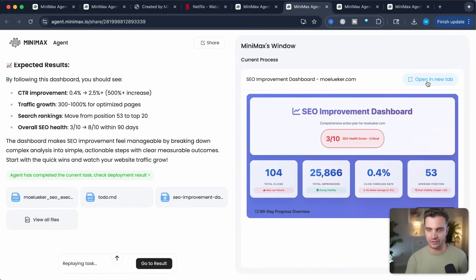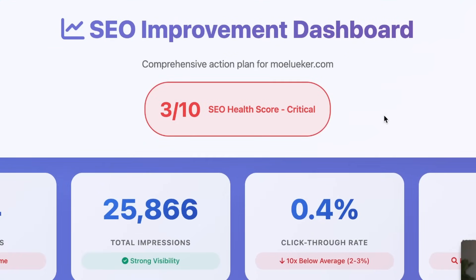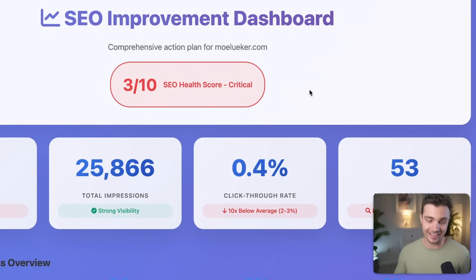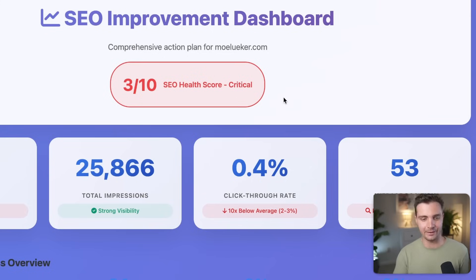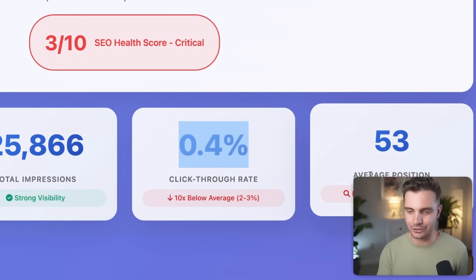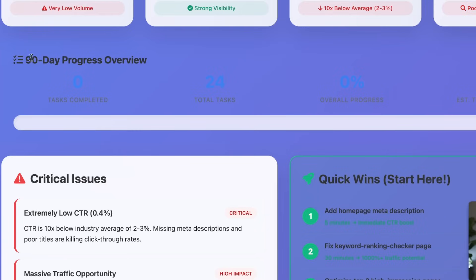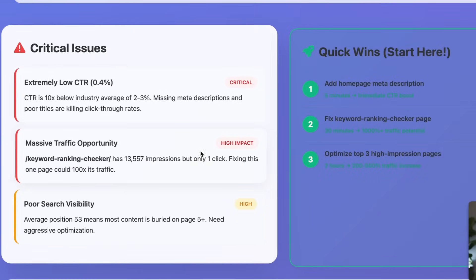Let's check it out in a new tab. Here we have the dashboard. My SEO health is very low, and that's why I'm ranking poorly right now. My click-through rate is 10 times below average and my average position is 53, which is below the target of less than 20. We can see the 90-day progress overview — it doesn't only show me where I stand, it also gives me actionable steps and insights to improve.